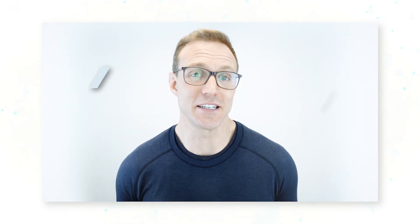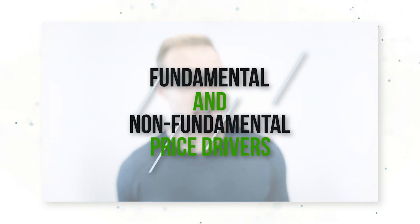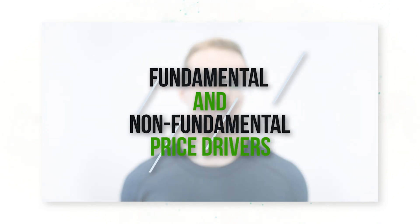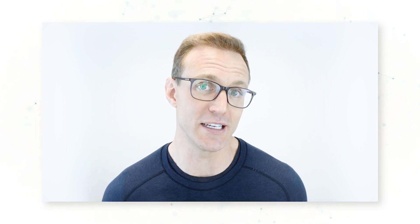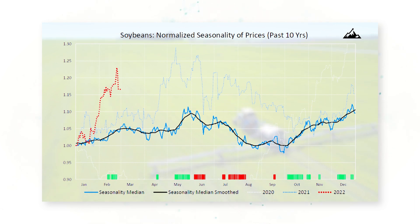Every year is different and has a different mix of fundamental and non-fundamental price drivers. But in general, taking a 10-year, 12-year, or 15-year price trend helps us see the big picture trend in futures prices throughout the year. We provide our clients with 10-year normalized price trends for every major commodity market, like we looked at for soybeans.